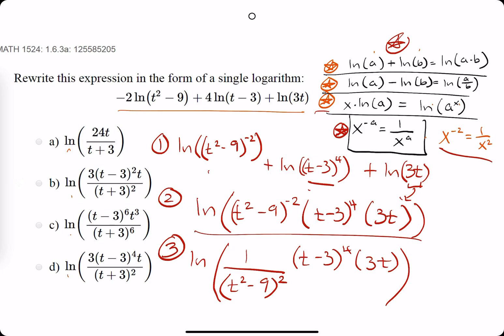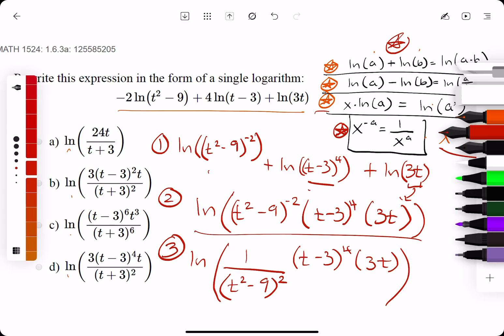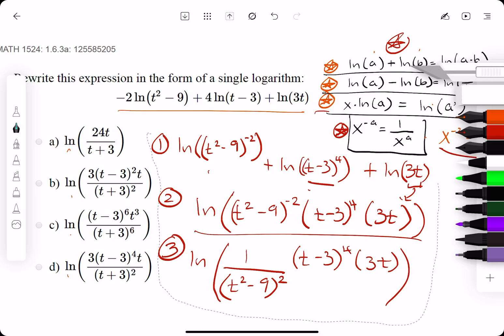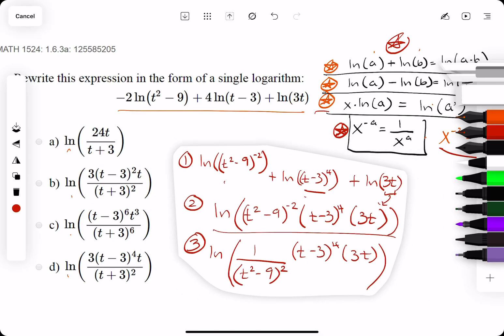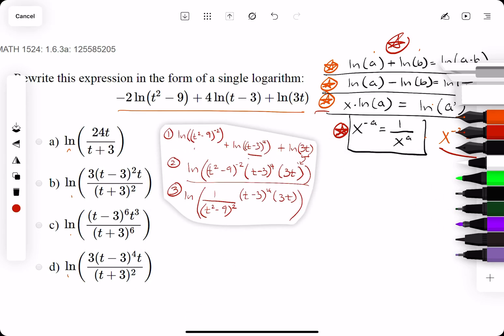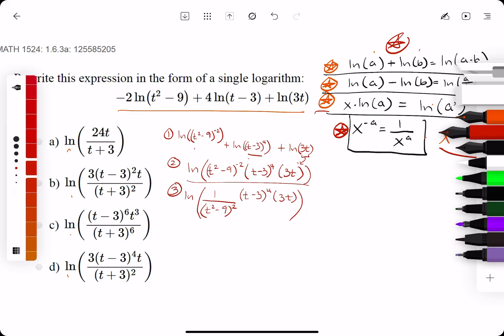Alright. So, we are getting closer. What I am going to do, see if I can highlight just this stuff right here. Let's shrink it down so we can fit more writing in here. So, the following steps, we have 4. And, basically what we have so far is ln of t minus 3 to the fourth 3t over t squared minus 9 squared. So, we are getting closer.